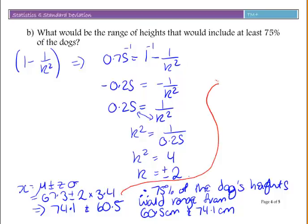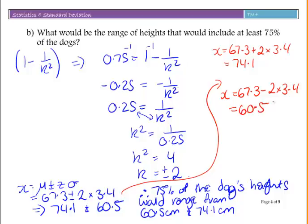If you're not sure about what I'm doing here, I've actually calculated twice. I've got x equals 67.3 plus 2 times 3.4, which gives me 74.1, and x equals 67.3 minus 2 times 3.4, which gives me 60.5. So the upper and lower values, because it is plus or minus 2.